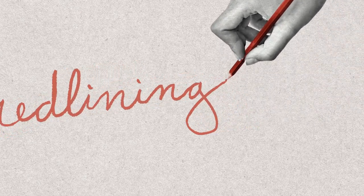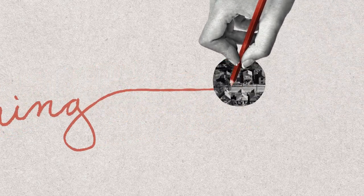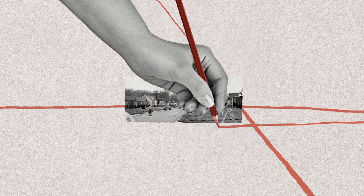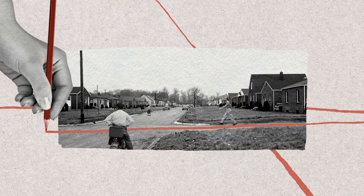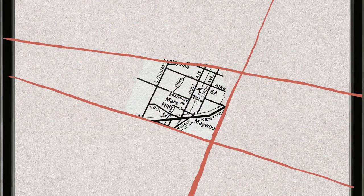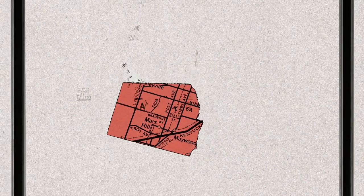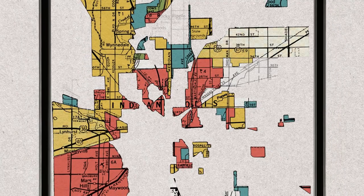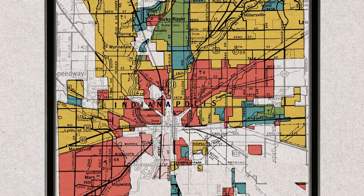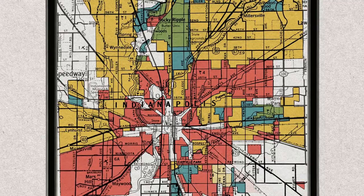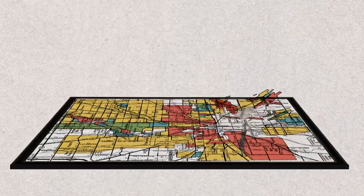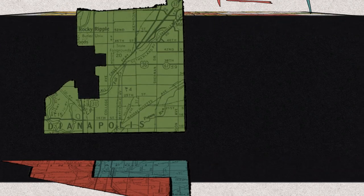Ever heard of redlining? What about reverse redlining? The term redlining came from government maps that color-coded neighborhoods based on perceived risk for home mortgage lending and insurance. Unfortunately, race, national origin, and religion played a significant role in how the maps were drawn up, and determined for decades who got access to home ownership and who didn't.